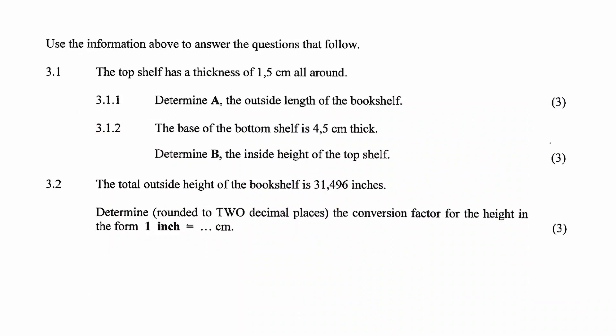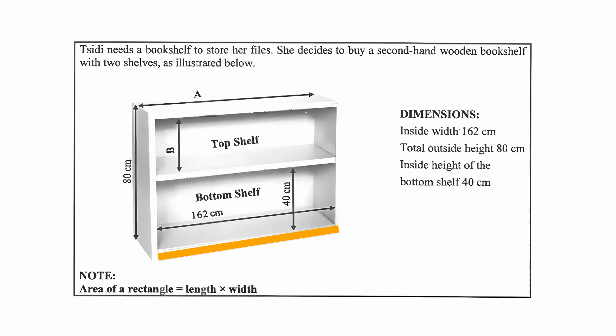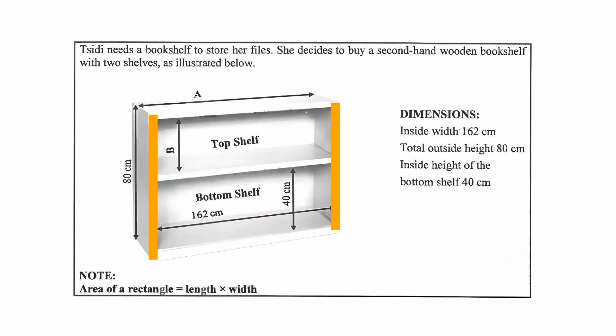In question 3.1, it is stated that the top shelf has a thickness of 1.5 centimeters all around. This means that the thickness of all the sides of the top shelf is 1.5 centimeters. Note that this mentions the top shelf only, and the base might have a different thickness. However, the sides of the top shelf and the bottom shelf have the same thickness because they share the same length of wood.